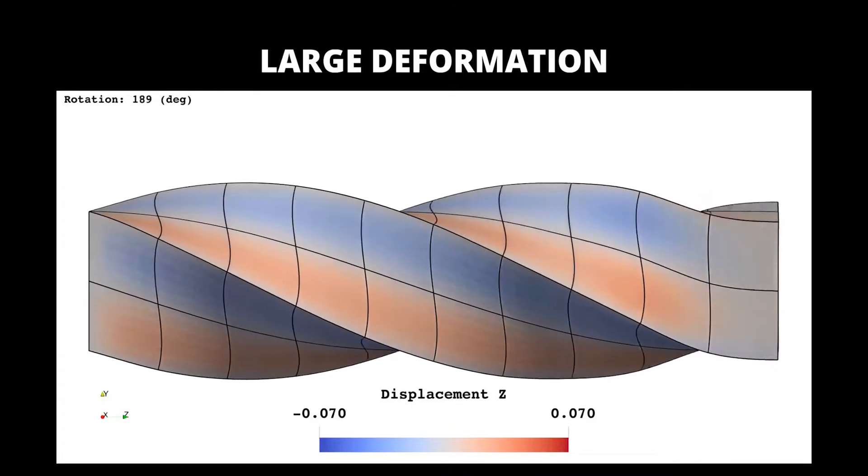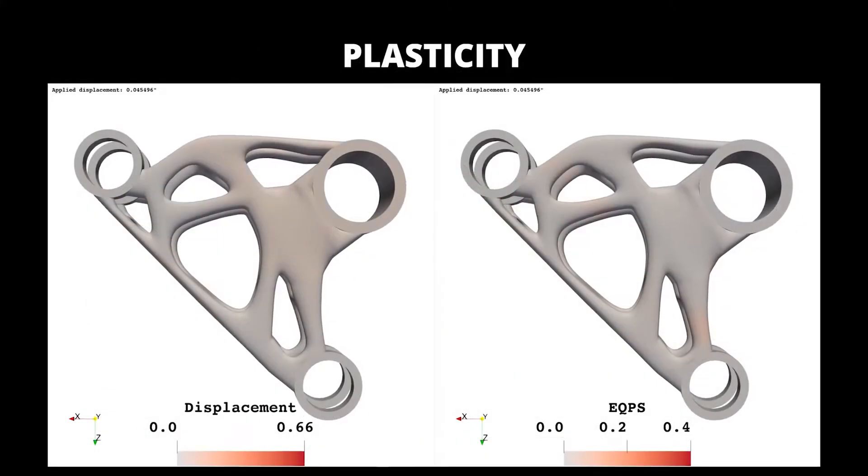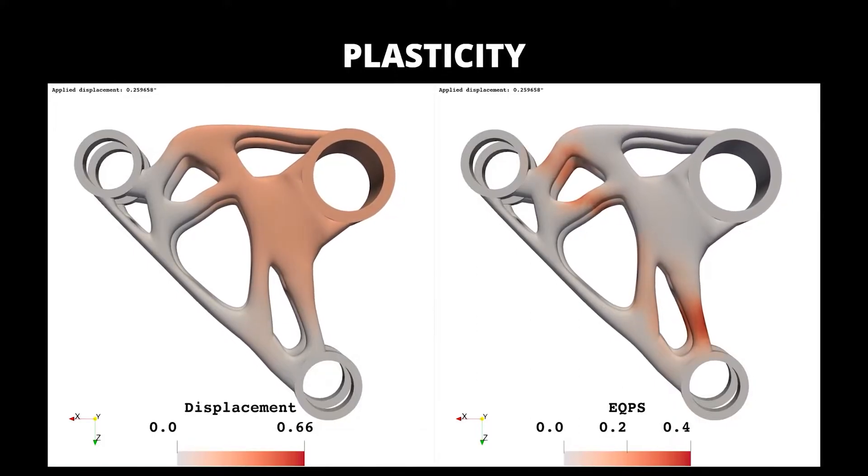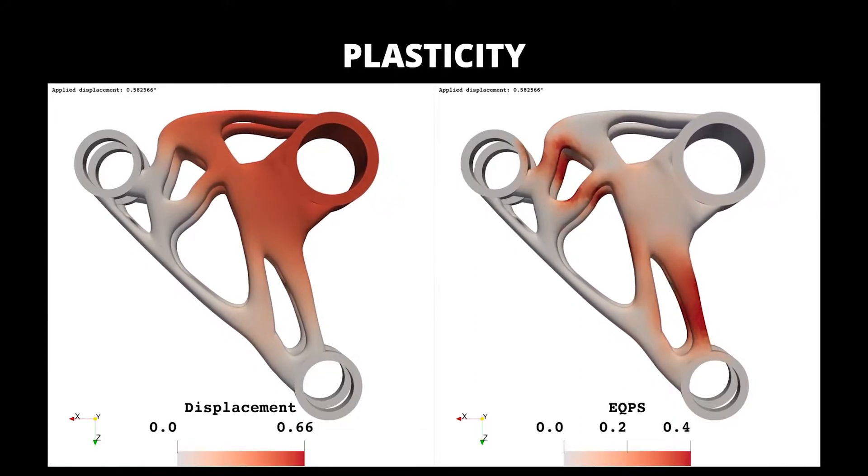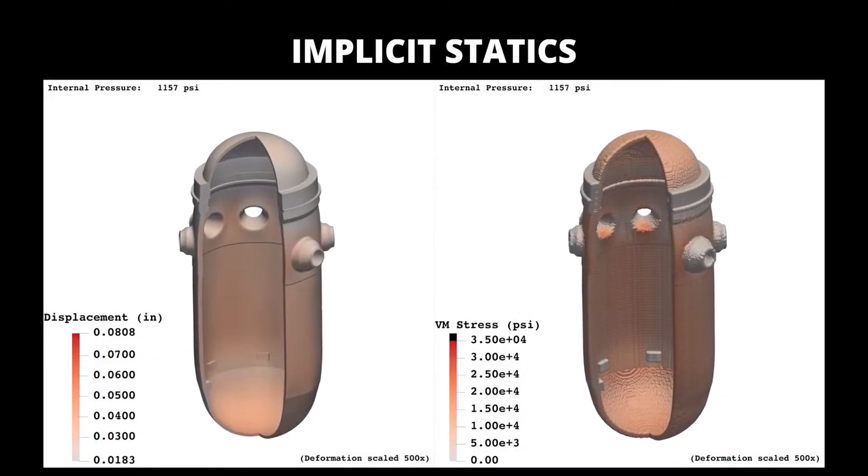Spline basis functions provide superior robustness and efficiency over traditional FEA and allow Coreform IGA to promise faster overall time to solution with improved accuracy. No de-featuring required.